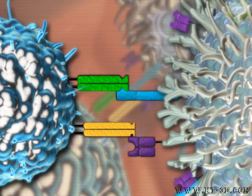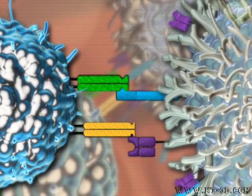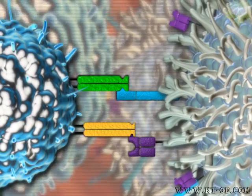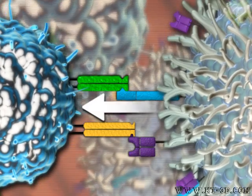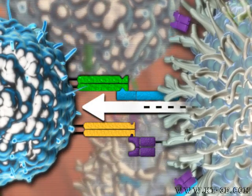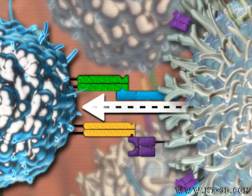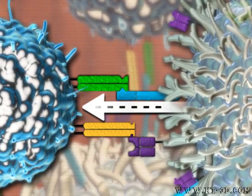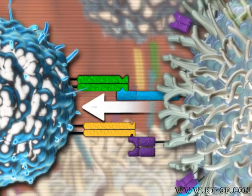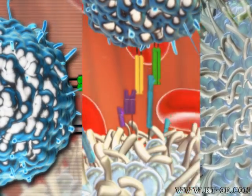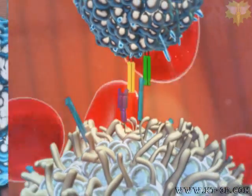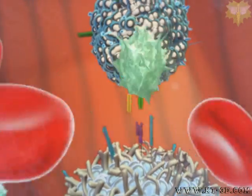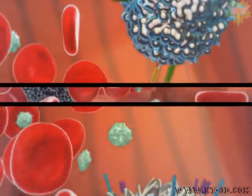Therefore, the binding of the inhibitory natural killer cell receptor to normal MHC1 sends a negative signal to inhibit signals from the activation natural killer cell receptors, which are bound to the target cell activating ligand.